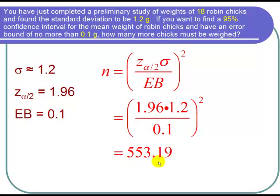Now it would be kind of cruel to take that last chick and chop it up into 0.19 and then weigh what's left. So instead we round up to 554.